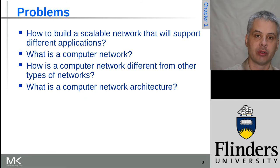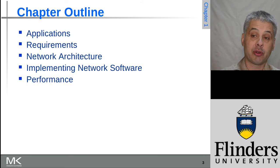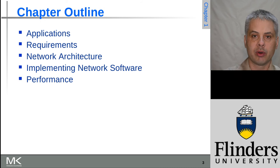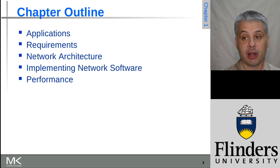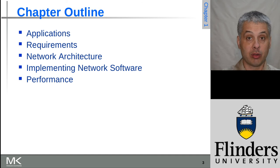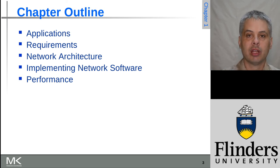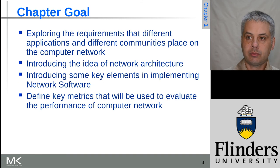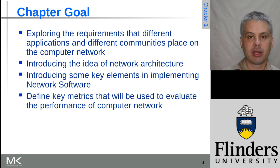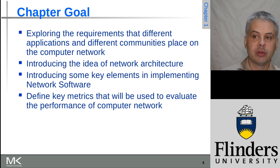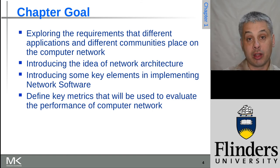These are the four problems we're going to look at in this chapter. We'll start by looking at applications — what are the things we can do with a network? From those applications, what are the requirements going to be for the network? Then we'll move on to network architecture, followed by what's involved in implementing networking software. And then how might we measure the performance of a network, and what are some of the things that might impact on it? The goal is to explore what requirements are needed to make a useful network, and what that can enable for communities.